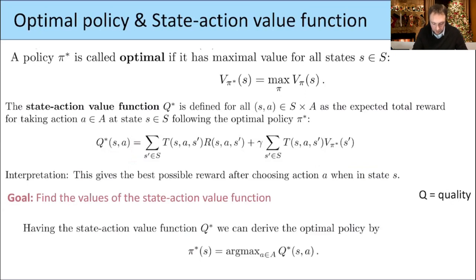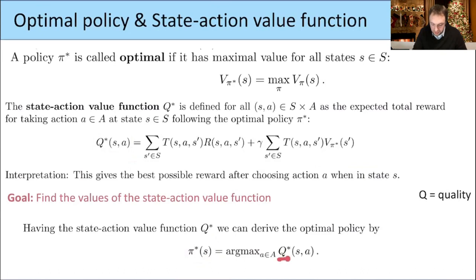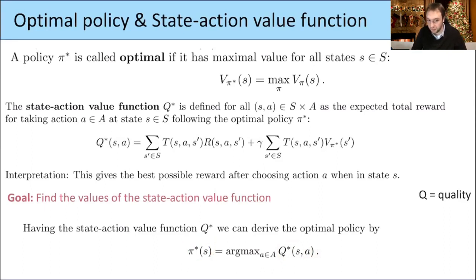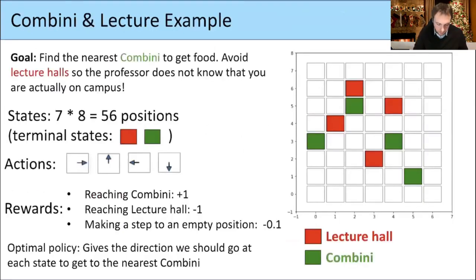If I want to know what to do when I'm in state S, I just need to check which action gives the biggest expected reward — that is, for which action does Q star(S, A) give the biggest value. The corresponding action which gives the highest value should be the value of the optimal policy.